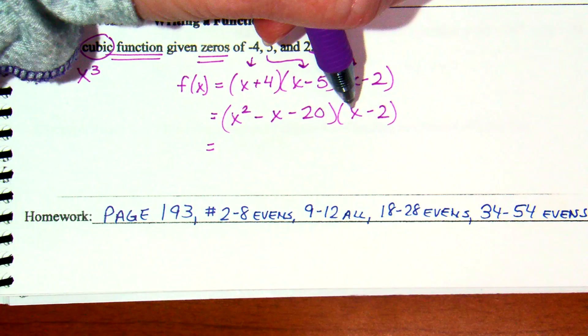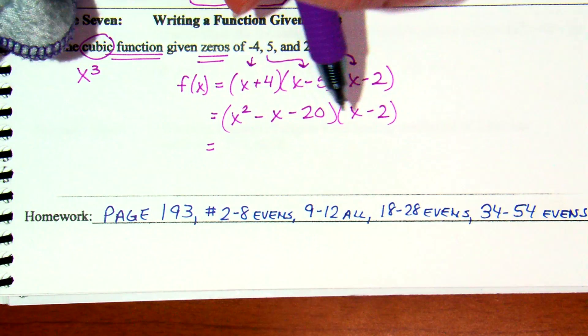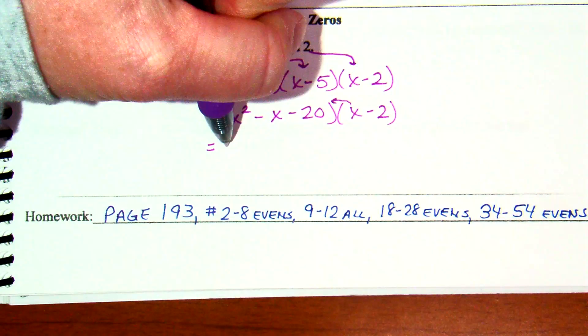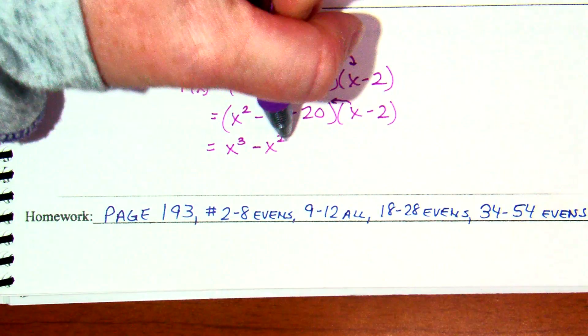And now, we can't really foil anymore because foil just goes for a 2 by 2, but we can distribute. You can do this however you want. I'll be honest. I like to use my binomial to distribute. It looks backwards, but it just makes my brain work easier. Meaning, I'm going to take this x and multiply it by everything in the other parenthesis, right?